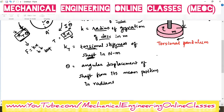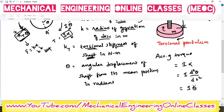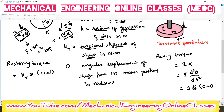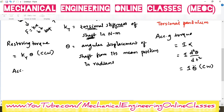The accelerating torque is given as I·alpha, where alpha can be replaced as the double differentiation of theta with respect to time. So accelerating torque is I·theta double dot, and this is in the clockwise direction. There is a restoring torque given as KT·theta, acting in the counter-clockwise direction. From Newton's second law of motion, accelerating torque should be equal to restoring torque.